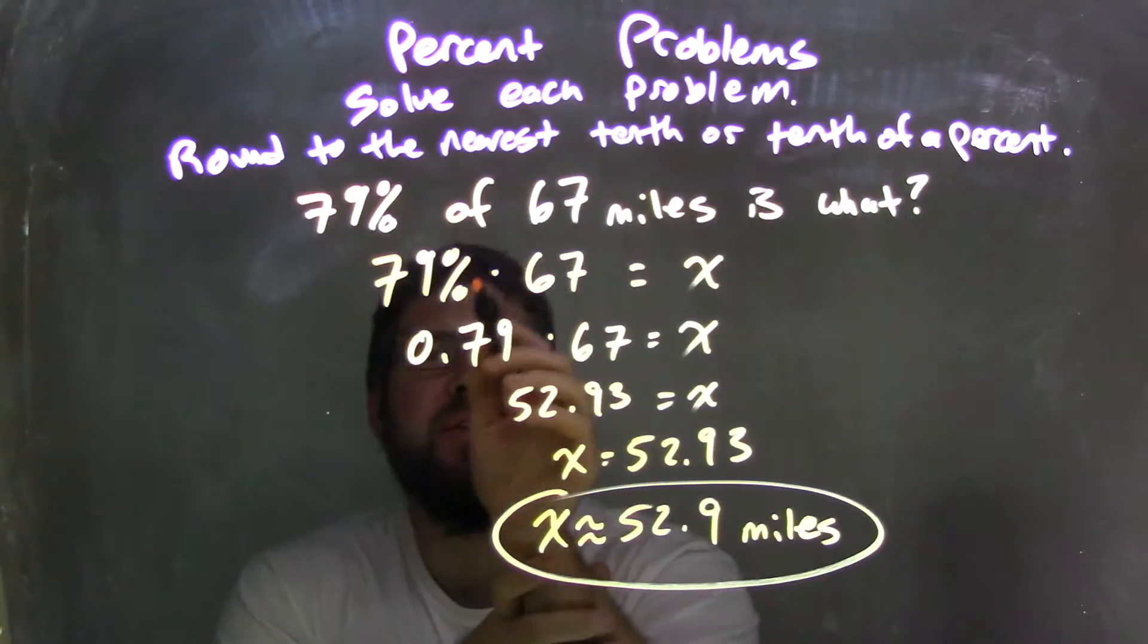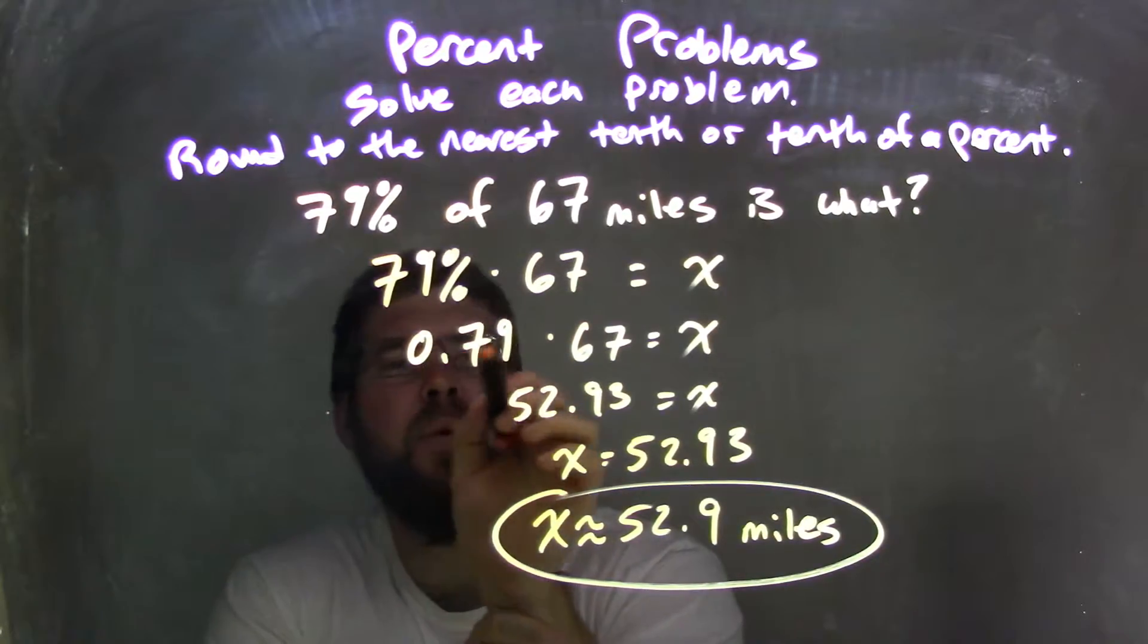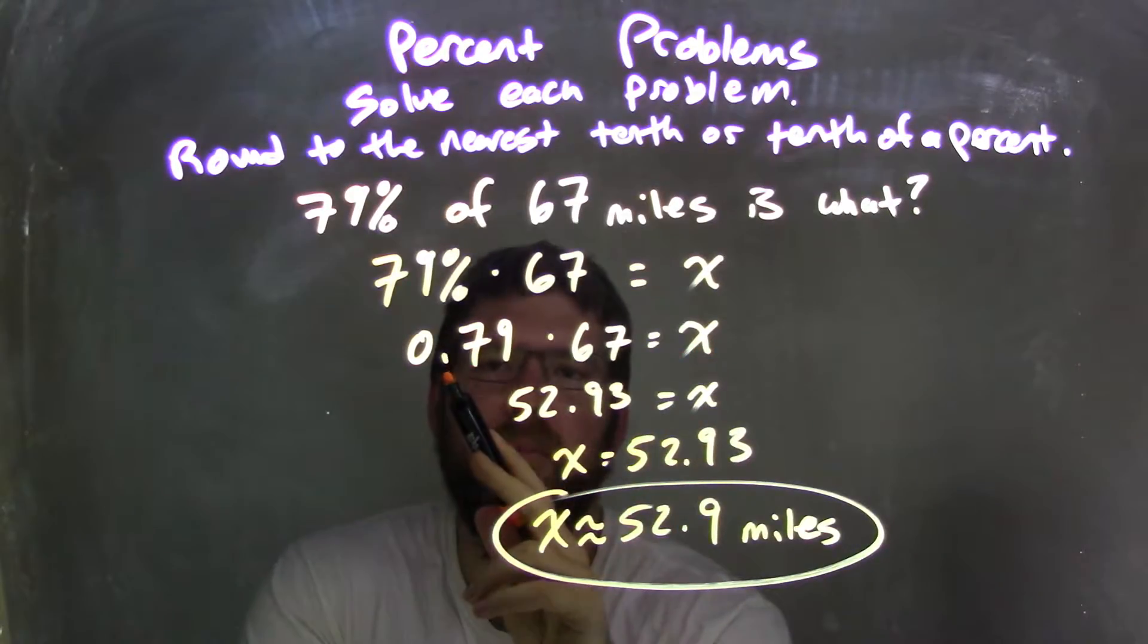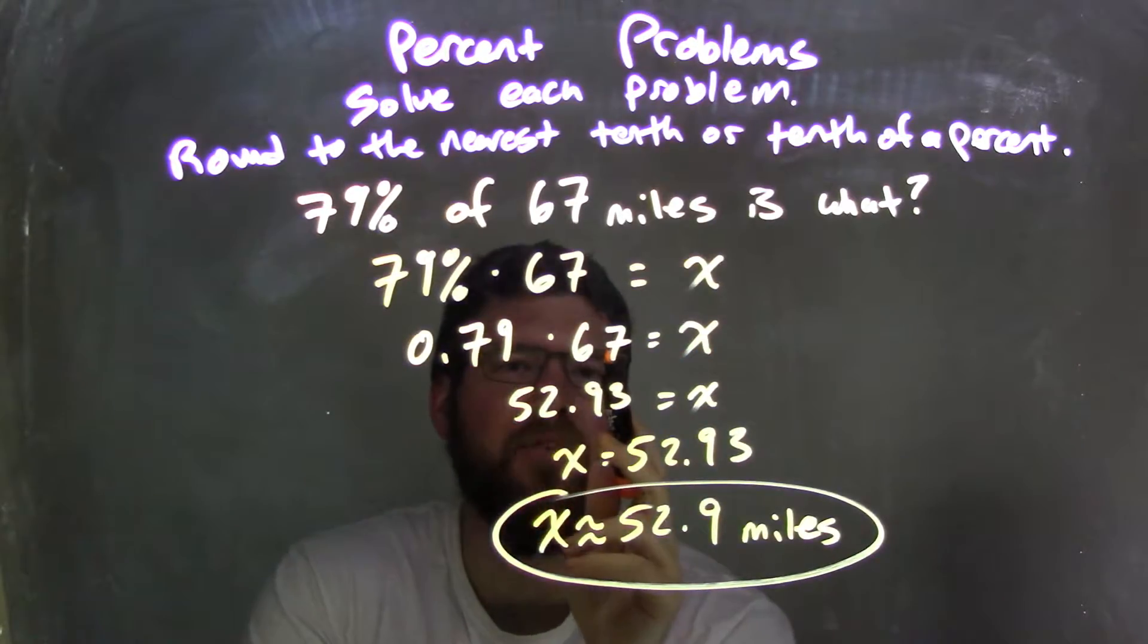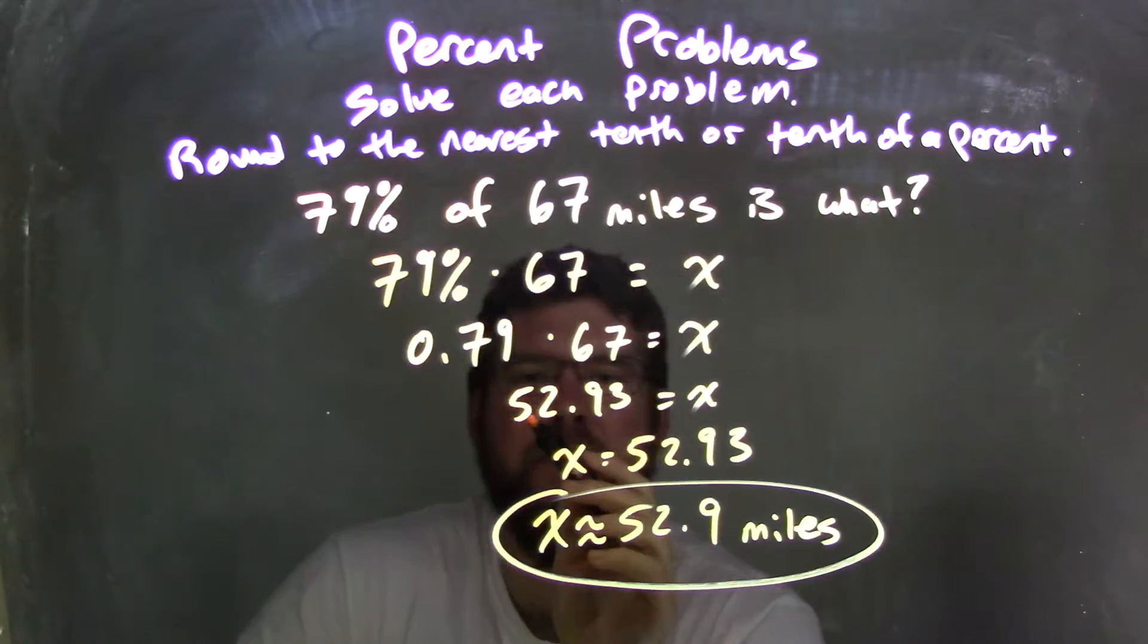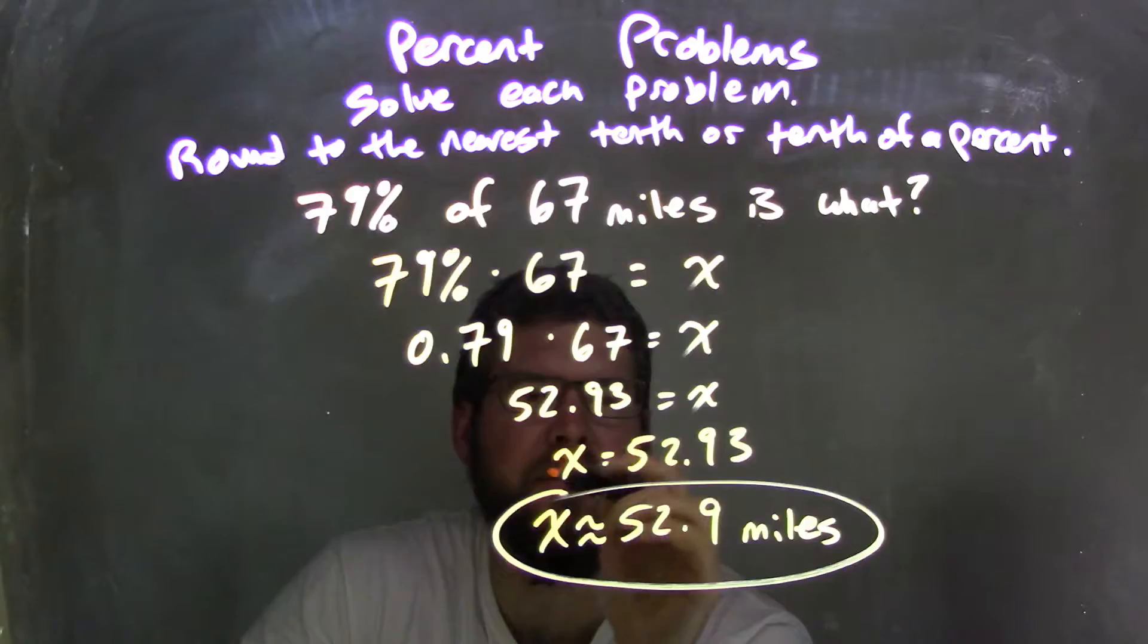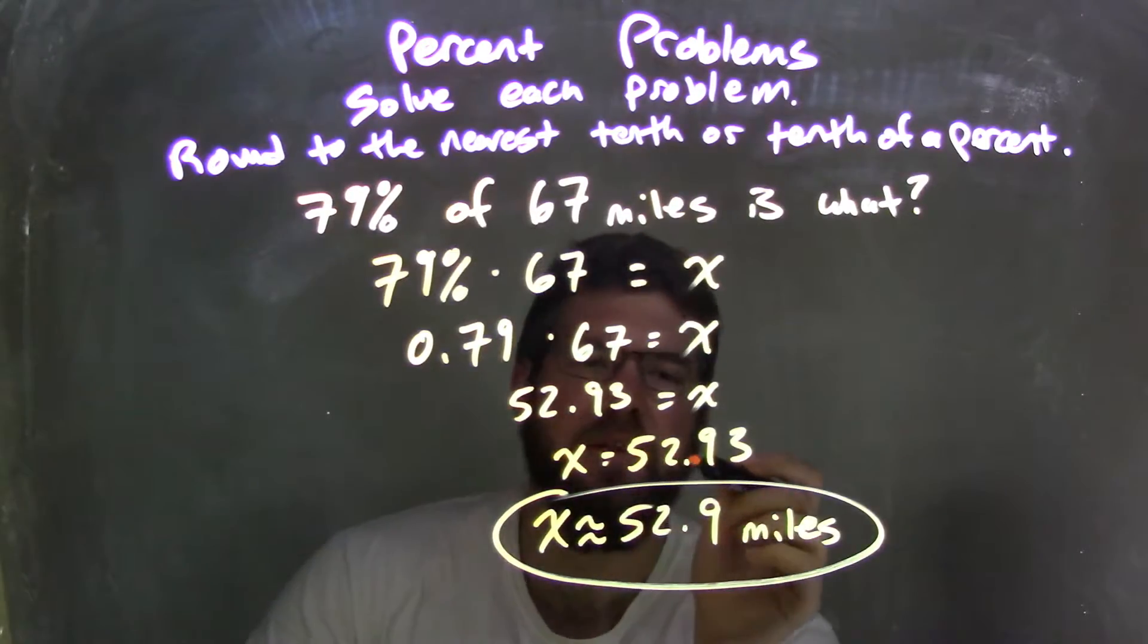I take the 79% converted to decimal, and I got 0.79 times 67 equals x. I then solve. So I've multiplied 0.79 times 67, which my calculator gave me 52.93. I then rearrange it to have x come first, because that looks nicer. So I have x equals 52.93.